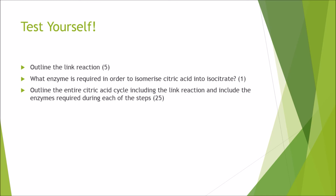Now we come to the end of the presentation. I am going to allocate marks to practice questions for you to try. For five marks: outline the link reaction. For one mark: what enzyme is required to isomerize citric acid into isocitrate? And for 25 marks: outline the entire citric acid cycle including the link reaction and the enzymes required during each step. Thank you for watching, I hope this helps for your revision, and good luck revising guys.